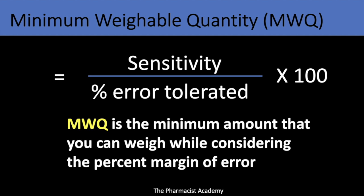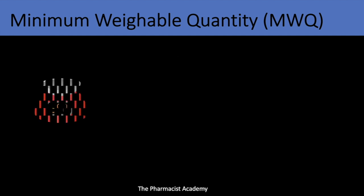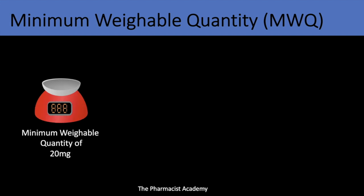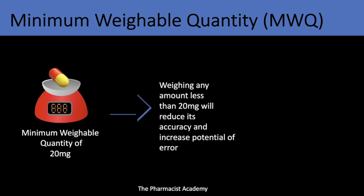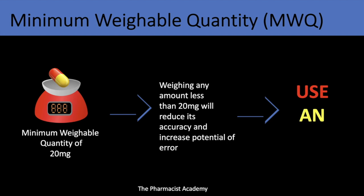If the minimum weighable quantity is 20 milligrams, that simply means you cannot weigh anything less than 20 milligrams because there's going to be inaccuracy and an increased potential for error. This is when you want to use an aliquot.